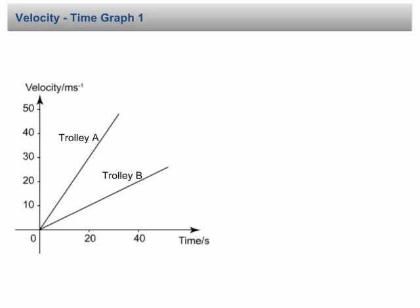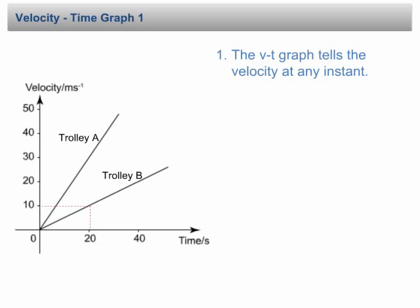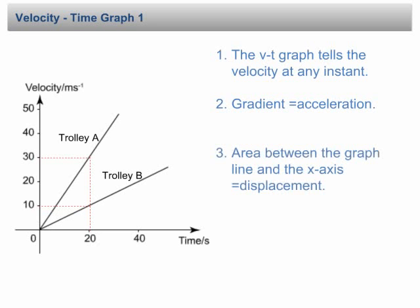There are a few things you need to know about a velocity-time graph. First, it tells the velocity at any instant. For example, in this graph, the velocity of trolley B at 20 seconds is 10 m/s, whereas the velocity of trolley A at 20 seconds is 30 m/s. Second, the gradient represents acceleration. Third, the area between the graph line and the x-axis represents displacement. Fourth, the positive and negative value of velocity tells the direction of motion.